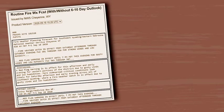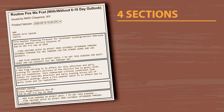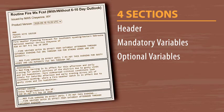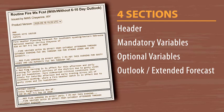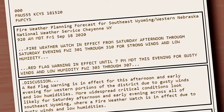All fire weather forecasts contain four sections: the header, mandatory variables, optional variables, and an outlook or extended forecast. So let's start with the header.